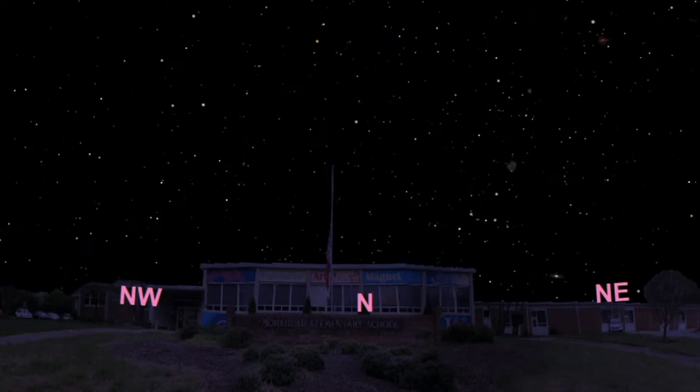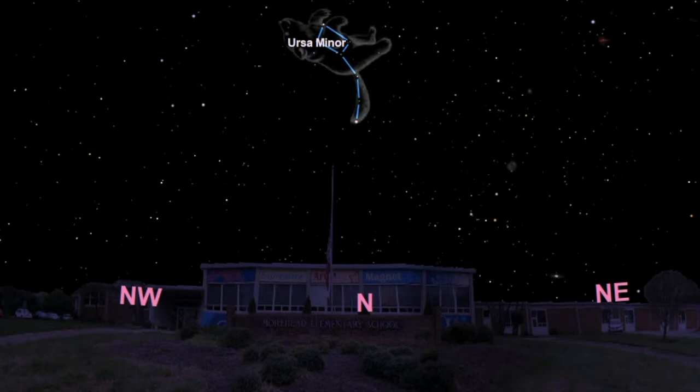If we wait until it is dark enough, we can see an important constellation right over your school building, Ursa Minor the Little Bear, which has the North Star Polaris at its tail.